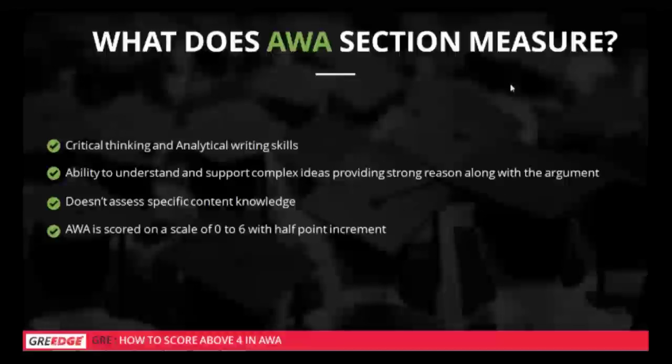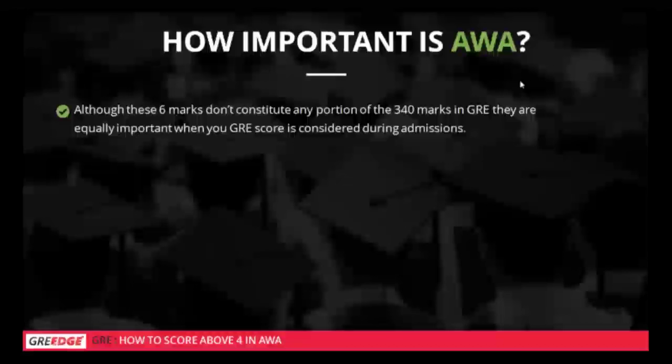Although the AWA six-mark score does not constitute any portion of the 340-mark GRE score, it is equally important when it comes to the admission process. Many in our audience are targeting universities like MIT, Harvard, Stanford, NYU, Illinois, UC Berkeley, Texas, Purdue, and Colorado — very ambitious targets indeed!